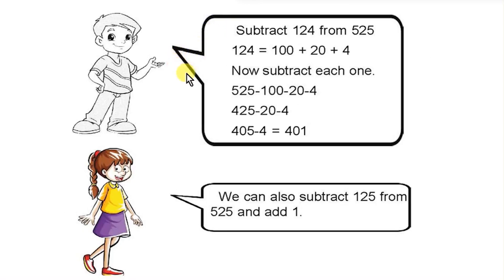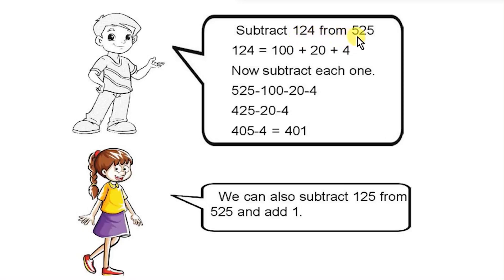This is the easy method for finding the discount price. The discount is $124. We subtract 124 from 525.